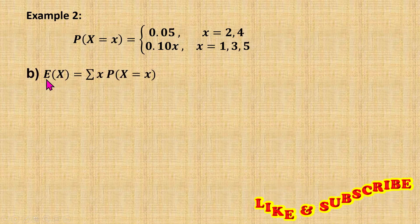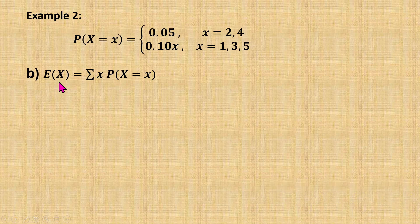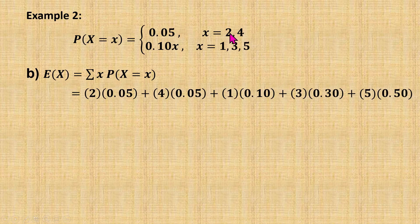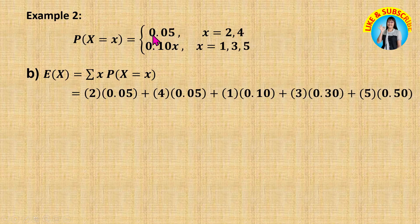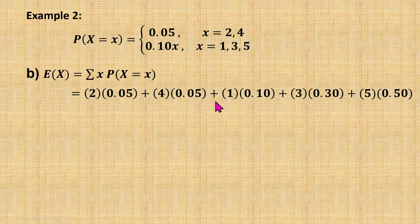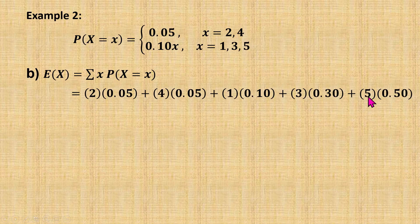Now we find the value of E(X). Since X is a discrete random variable, E(X) equals the sum of X times the probability. When X is 2, probability is 0.05, so 2 times 0.05. When X is 4, probability is 0.05, so 4 times 0.05. When X is 1, probability is 0.10, so 1 times 0.10. When X is 3, probability is 0.3. When X is 5, so 5 times 0.5. When we calculate, E(X) is 3.8.